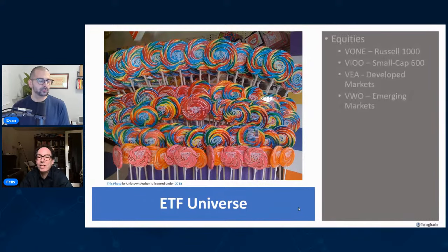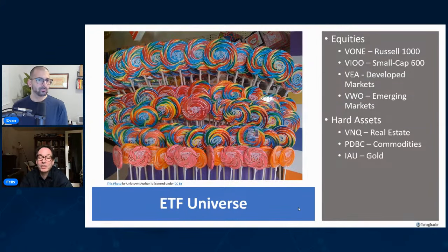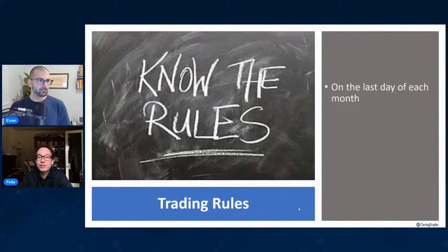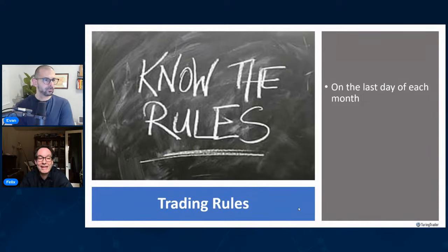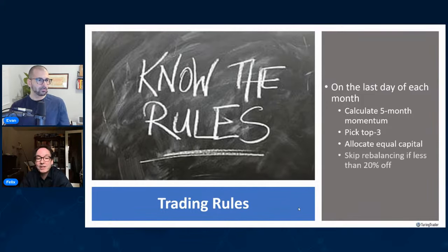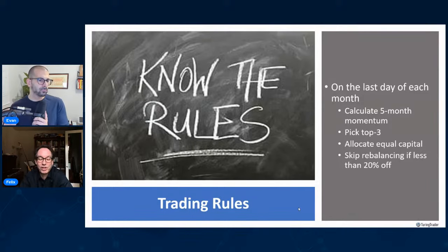The strategy trades equities — some large cap, some small cap, developed markets and emerging markets. It also trades hard assets: real estate, commodities, and gold. And it trades fixed income — basically long-term versus short-term treasuries. The rules are very easy: it evaluates all assets on the last trading day of each month, calculates the five-month momentum, picks the top three, and allocates equal capital to each. Livingston also skips rebalancing if there's less than 20% discrepancy between the desired and current allocation.